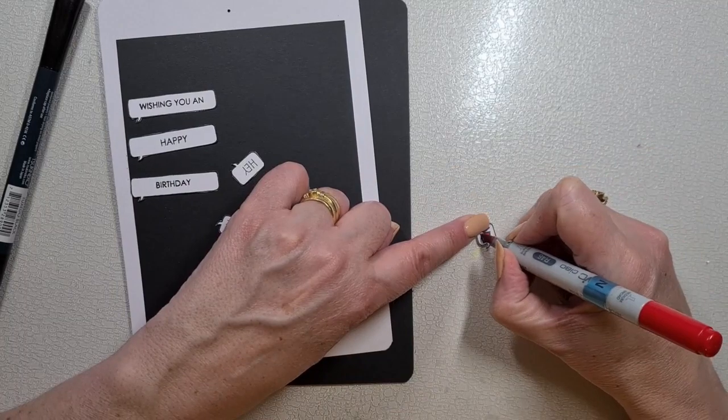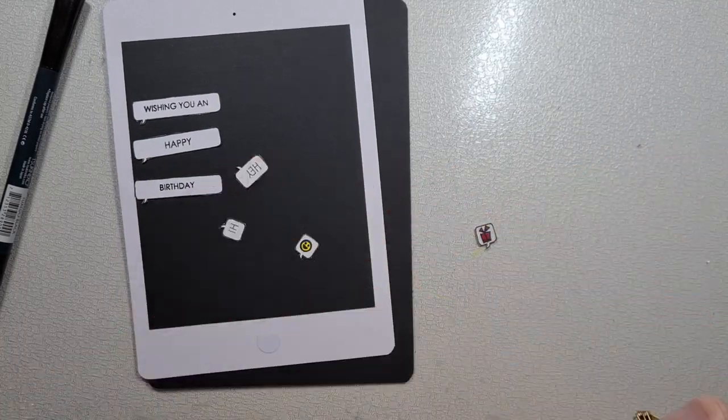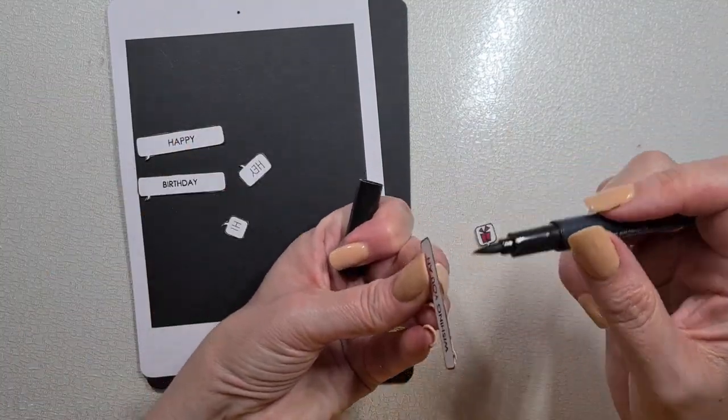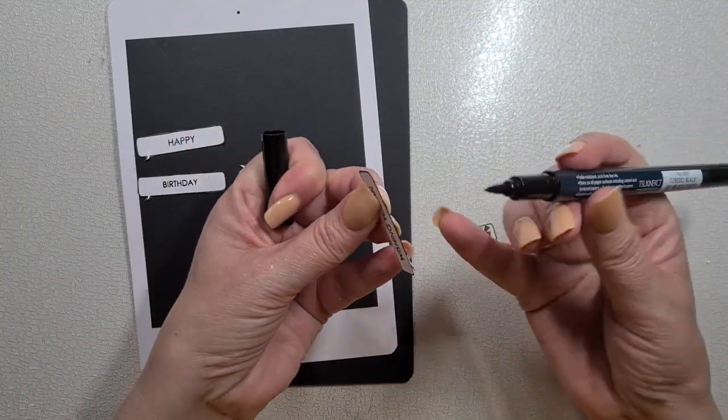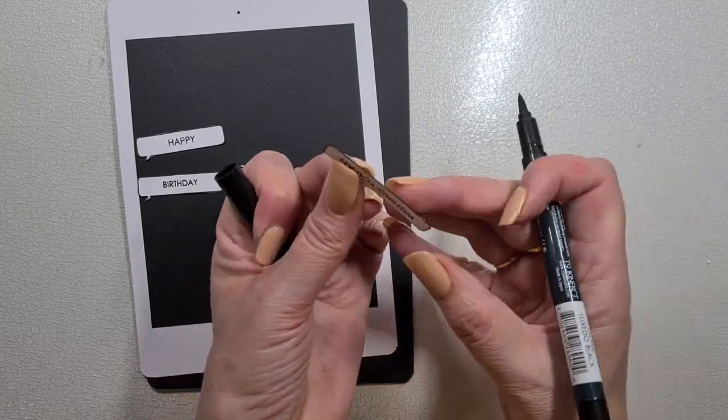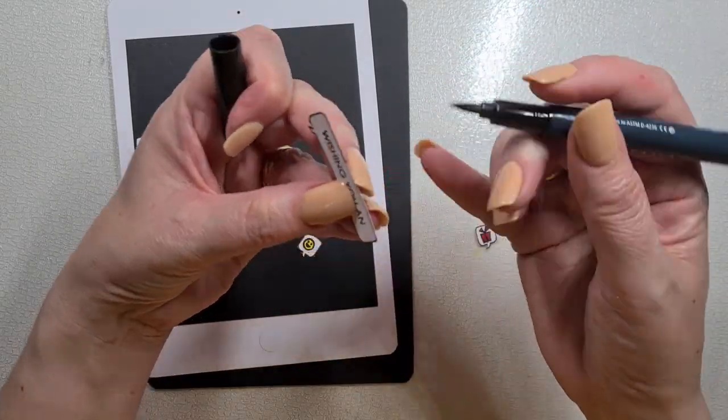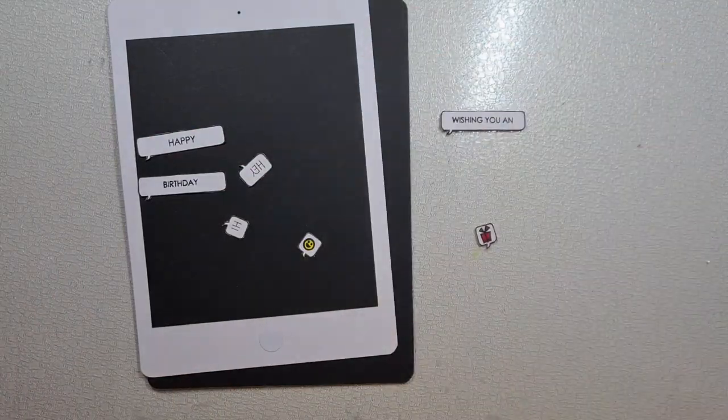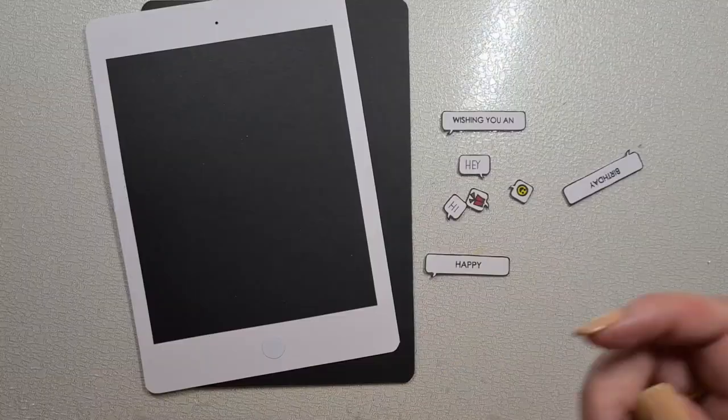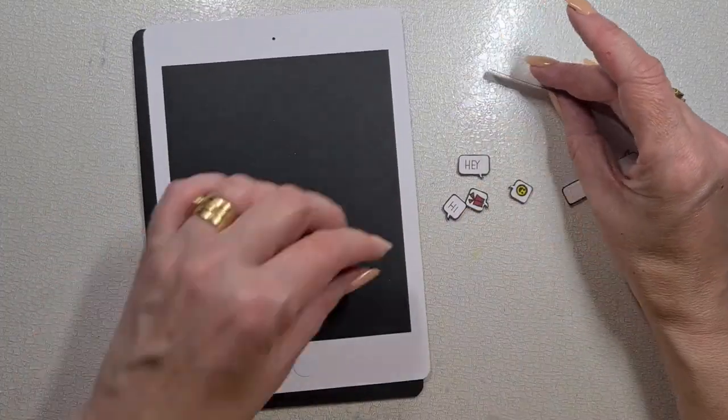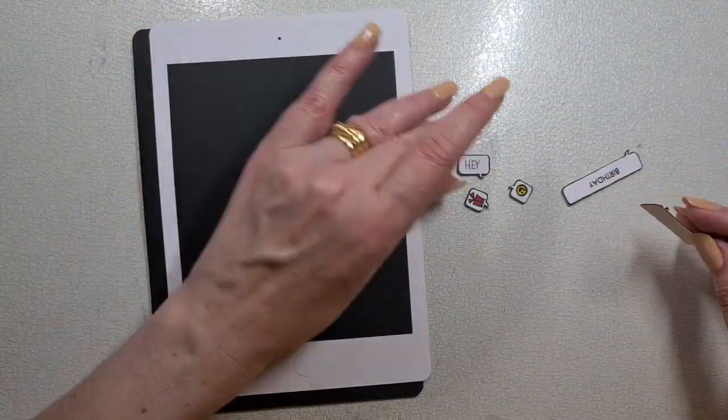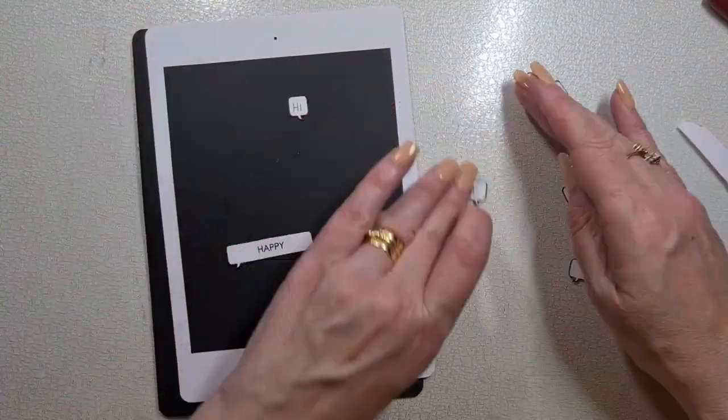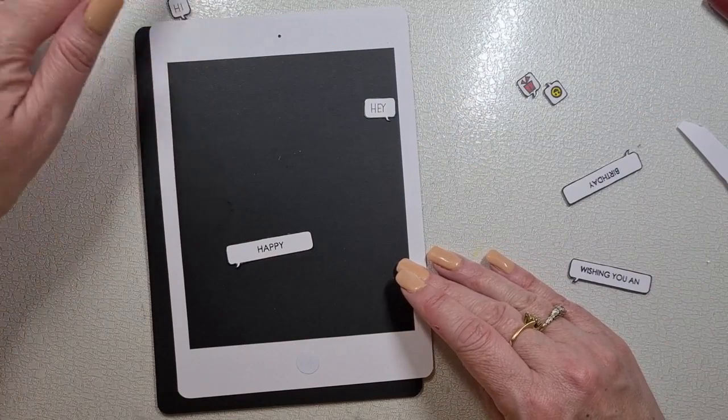We're now going to go in with some R59 and R46. You could probably just do it straight and not have to worry about using any shading, but you know me, I go overboard using Memento marker just to go around the outside. So there's our happy, there's our hi.